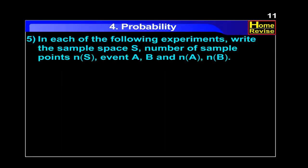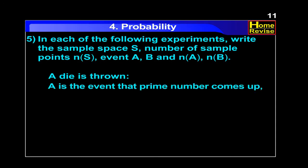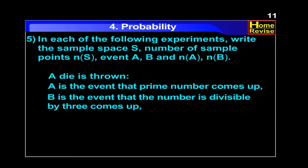In each of the following experiments, write the sample space S, number of sample points n of S, events A, B and n of A, n of B. A die is thrown. A is the event that a prime number comes up. B is the event that the number is divisible by 3.